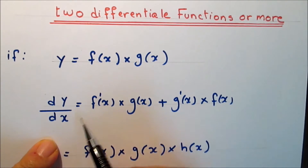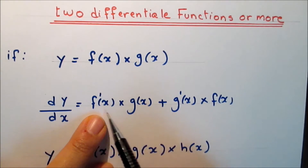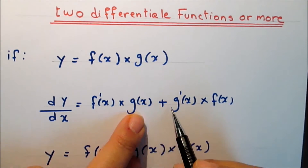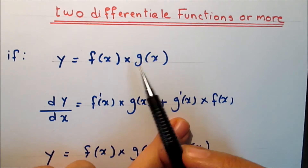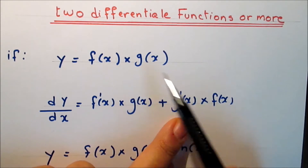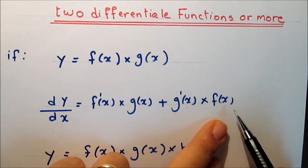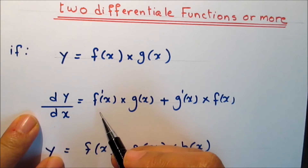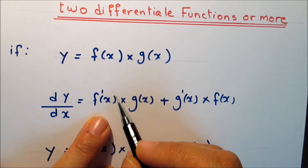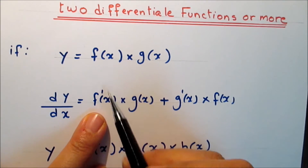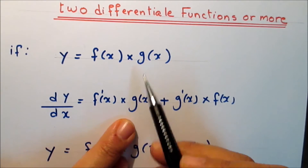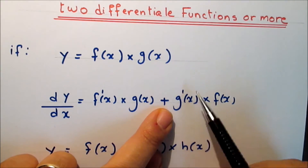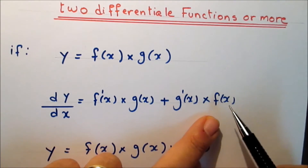So dy/dx equals f' times g plus g' times f. In other words, dy/dx equals the derivative of the first times the second, plus the derivative of the second times the first.